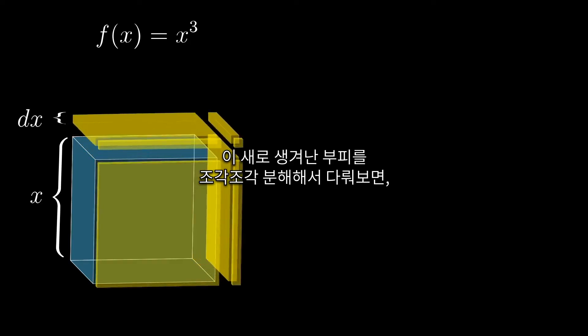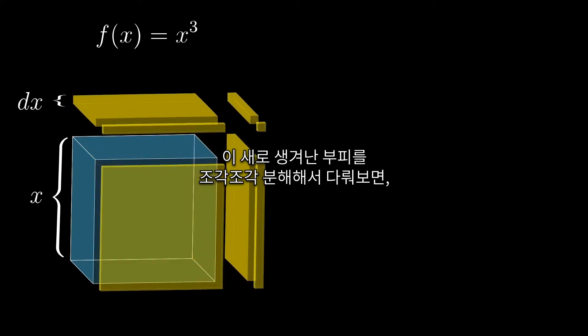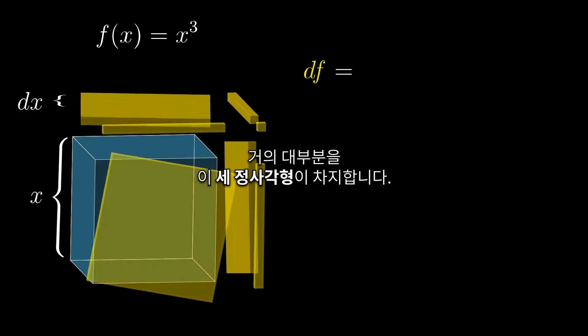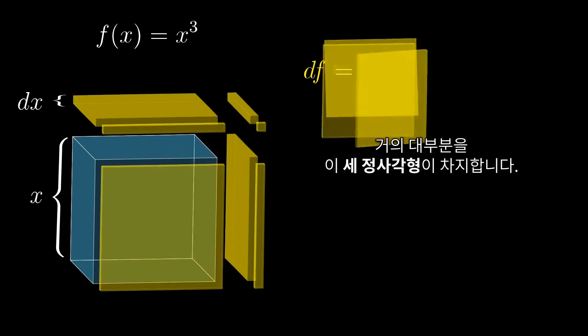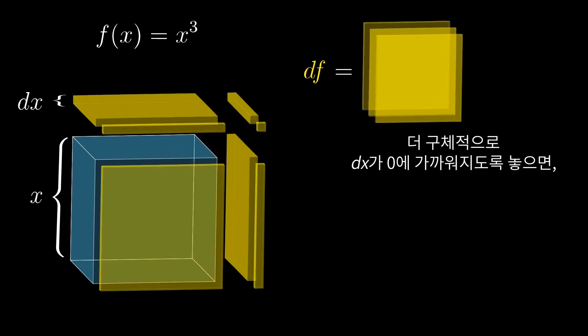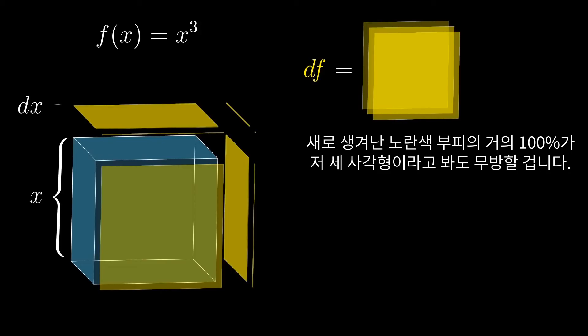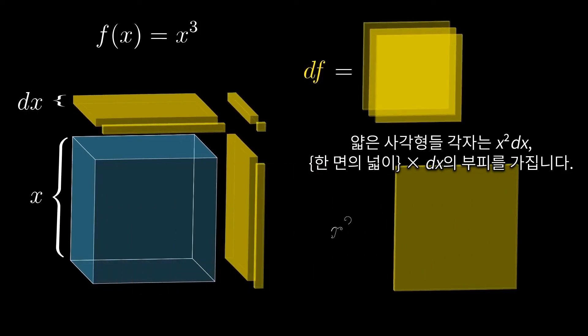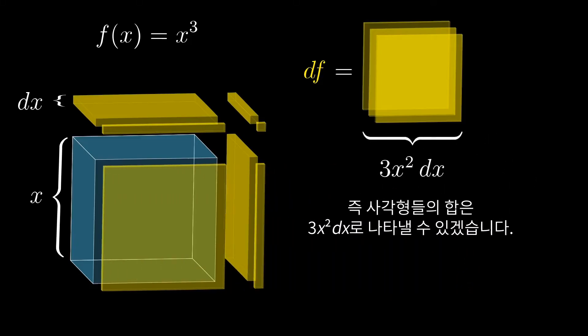It's nice to think of this new volume as broken up into multiple components, but almost all of it comes from these three square faces. Or said a little more precisely, as dx approaches 0, those three squares comprise a portion closer and closer to 100% of that new yellow volume. Each of those thin squares has a volume of x squared times dx, the area of the face times that little thickness dx. So in total, this gives us 3x squared dx of volume change.